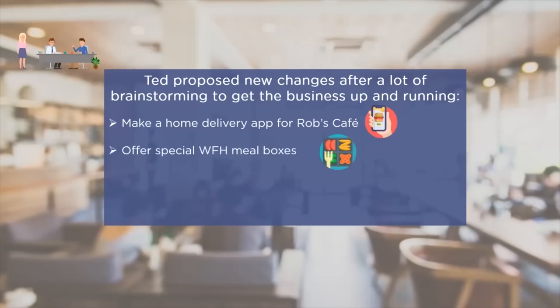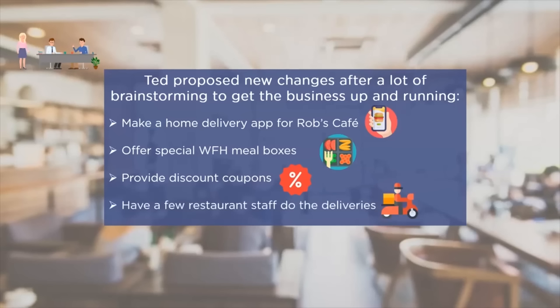Next, Ted suggested that Rob add work-from-home meal boxes to his menu, since many professionals are working from home and such boxes would be a good pick in the middle of a busy day. Ted's third suggestion was to bring down the selling cost by providing discount coupons that can be utilized by customers, enabling more customers to order from Rob's cafe. Finally, Ted suggested that Rob's staff facilitate home delivery orders, so he didn't have to lay off his staff while also getting home delivery running. So these were a few suggestions given by Ted.